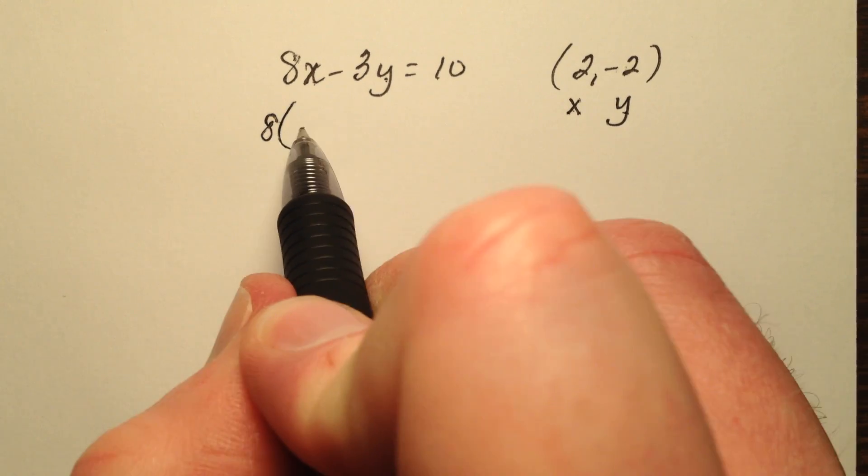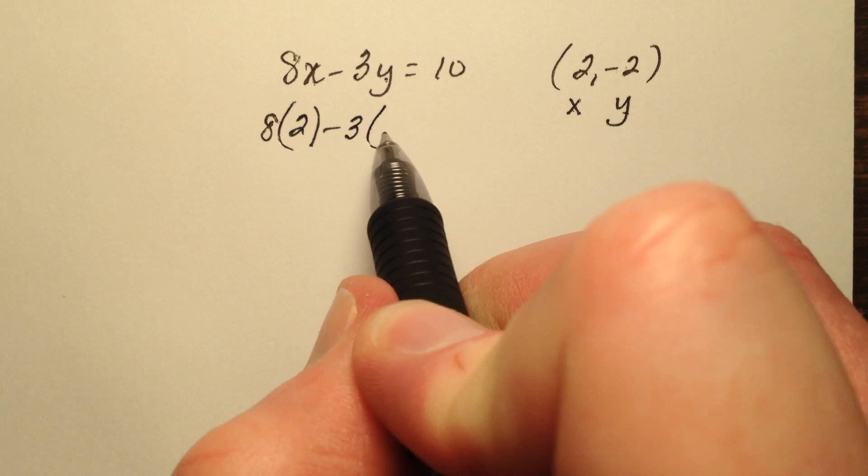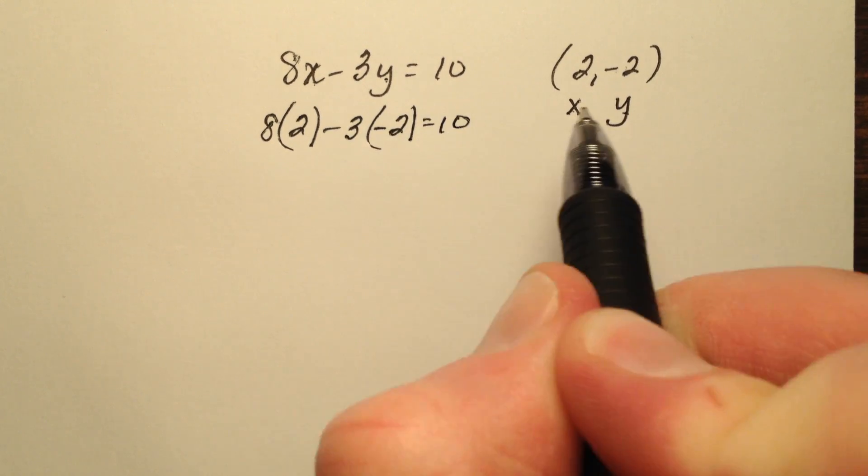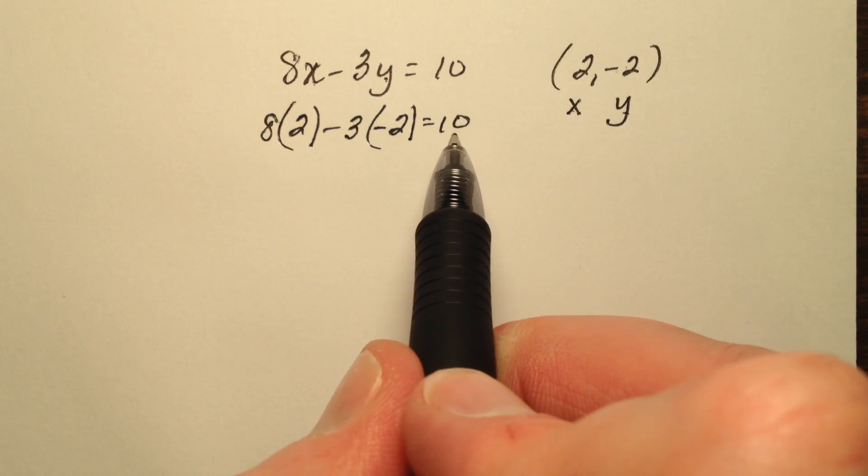So 8 times my x value of 2 minus 3 times my y value of negative 2 equals 10 perhaps, we're going to see.